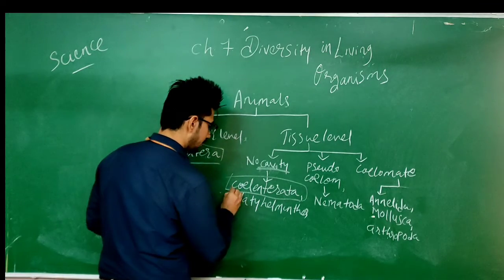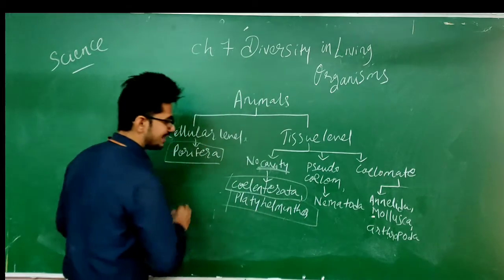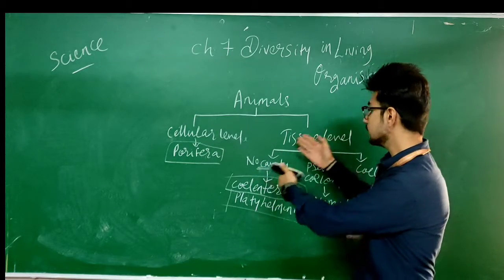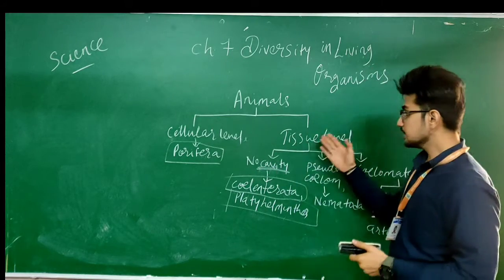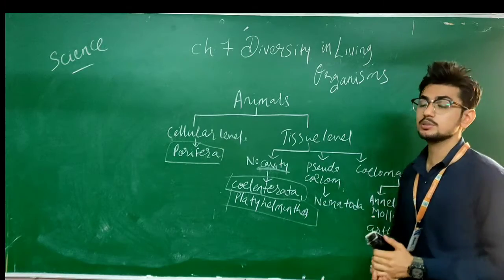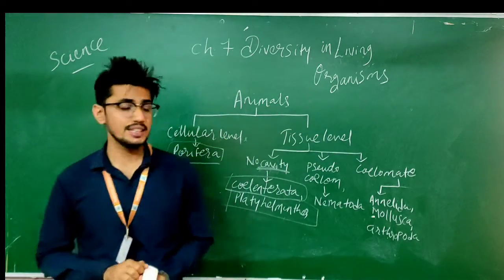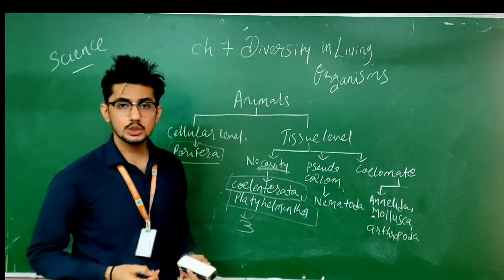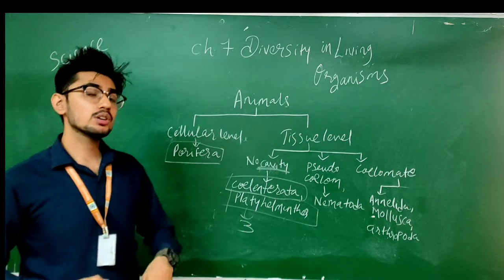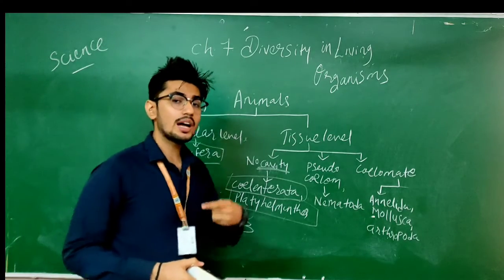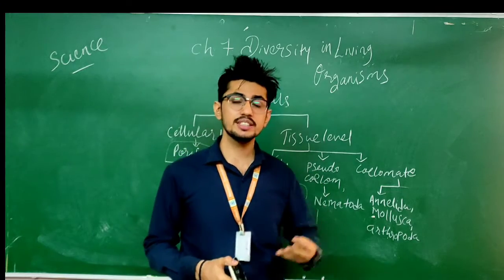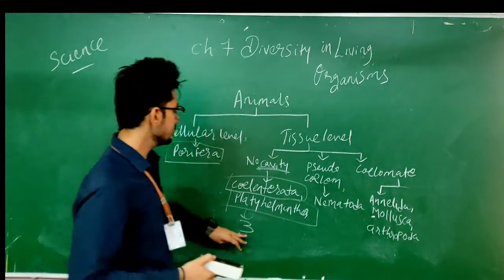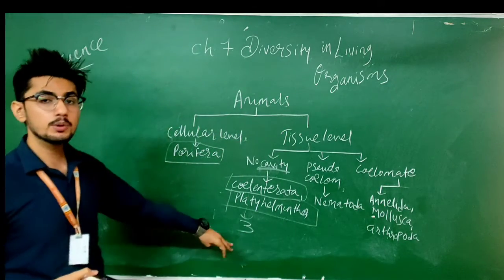Now if we move on to the next division — for the low cavity organisms — there is Platyhelminthes. Platyhelminthes is much more complex compared to Coelenterata. They have tissue level differentiation and also three layers of skin or tissues. Therefore they are also known as triploblastic. The first layer is for outer skin, the second layer is for inner skin, and the third layer is for the mingling of organs or tissues inside.